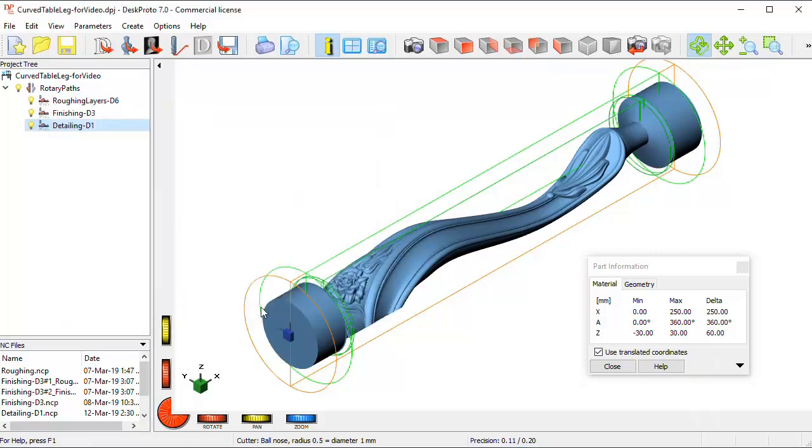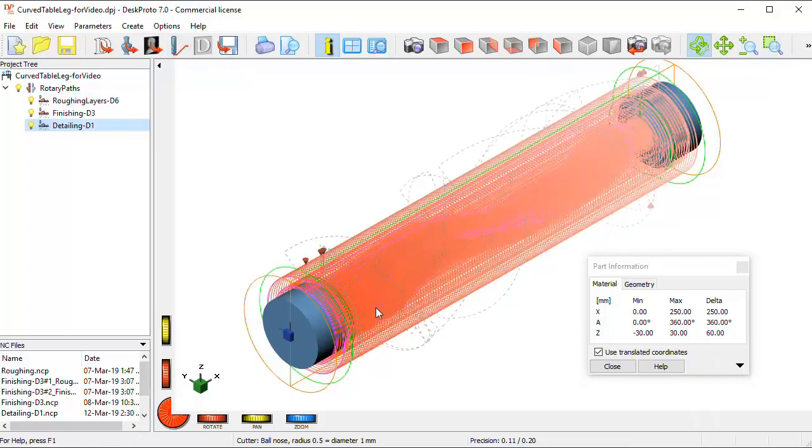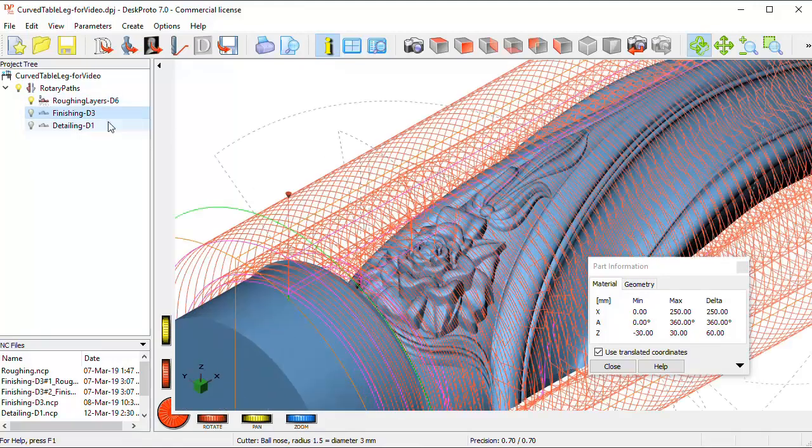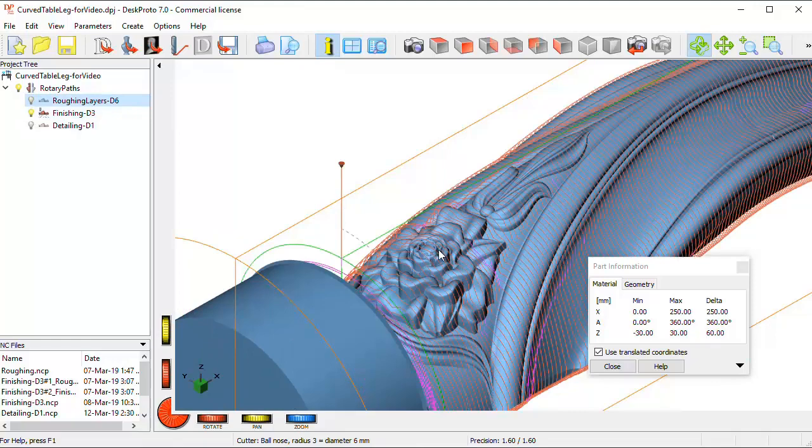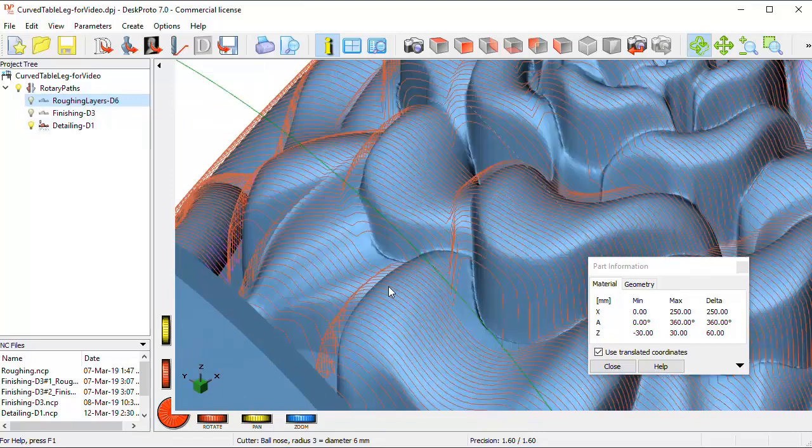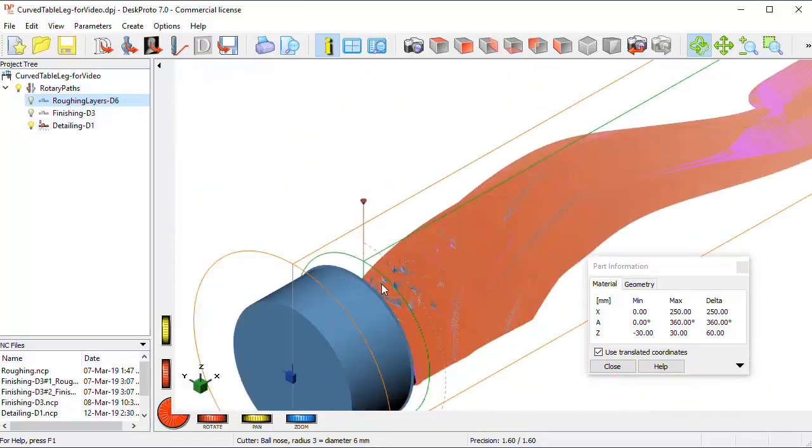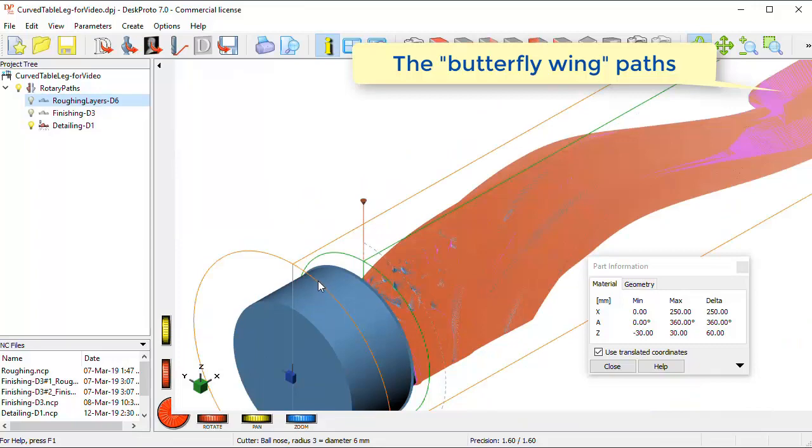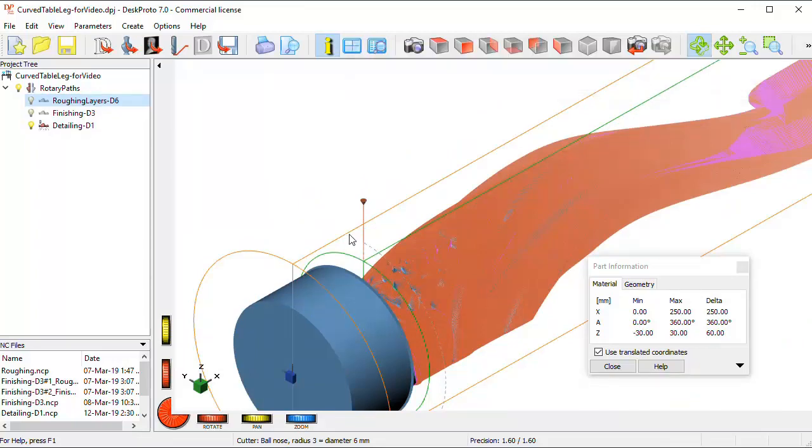And then we can calculate toolpath, which will obviously take quite long, especially for the detailing operation, so we have already done that. And when we save those toolpaths, let me show them one by one, here is the roughing in layers, here is the finishing, one helix, and here is the detailing, a very detailed helix. When we save those toolpaths and send them to the machine, I will show you what happens then.